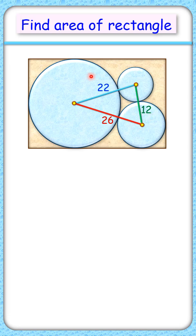Let's assume the radius of circles as x, y, and z cm. So x plus y is 26, x plus z is 22, and y plus z is 12.